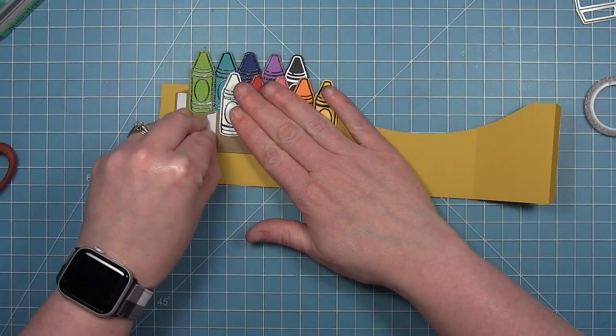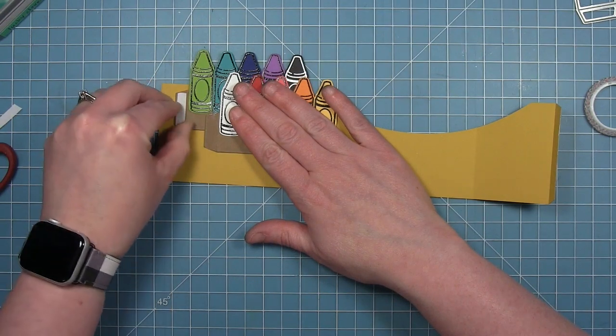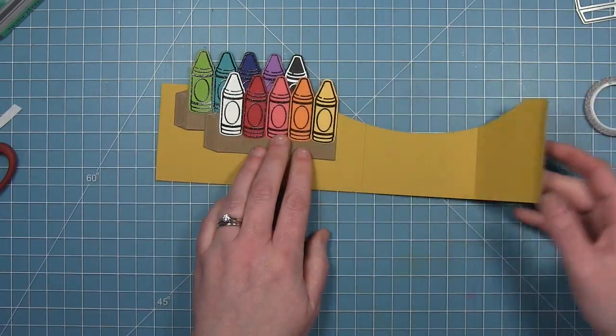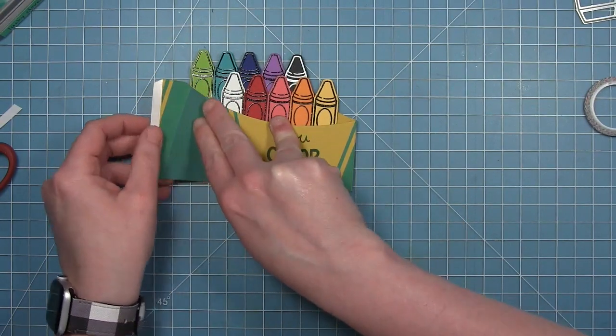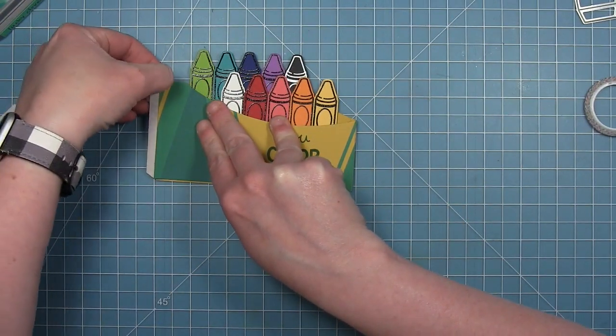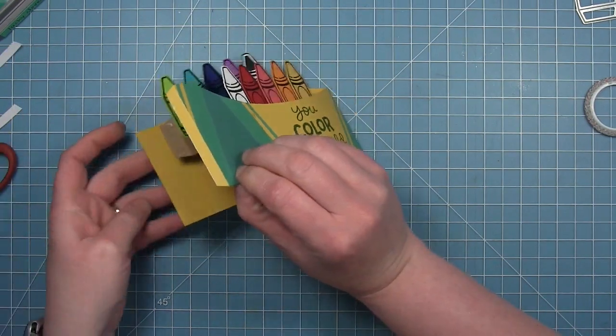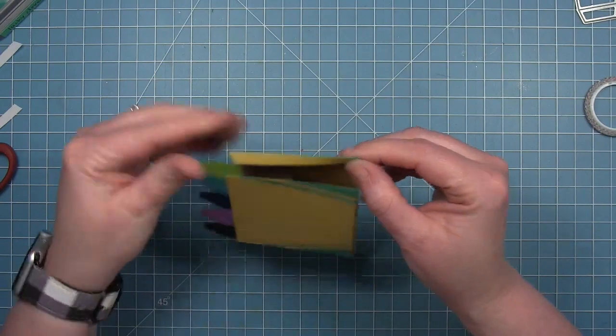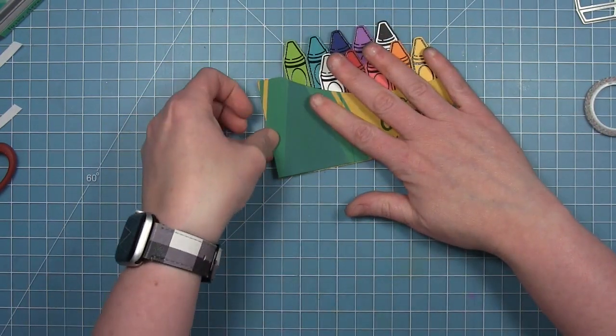So now that I have them where I want them I can just hold them in place. Pull off the rest of that liner from that adhesive tape. And then I'm just going to fold my box closed. I can also peel off the liner off that back of the box. Fold it in and complete the entire box by closing it up.